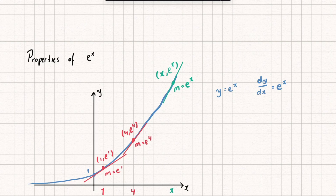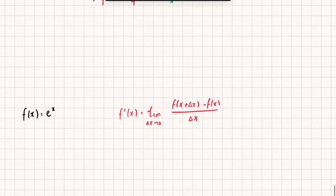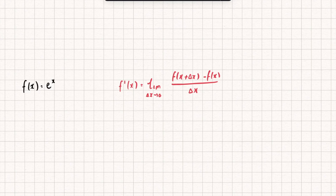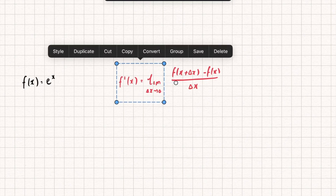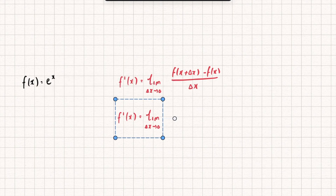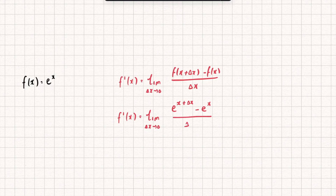You might be wondering why eˣ is its own derivative. One way to see this is through differentiation from first principles. Using the definition, the derivative is the limit as delta x tends to 0 of f(x + delta x) minus f(x), all over delta x — which becomes: the limit as delta x tends to 0 of e to the (x + delta x) minus eˣ, over delta x.